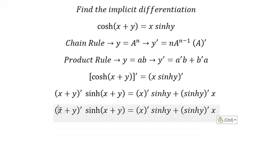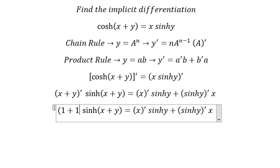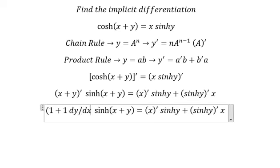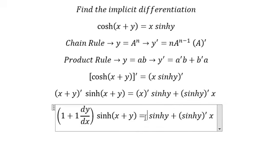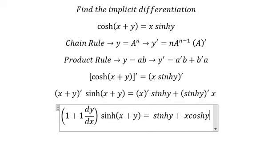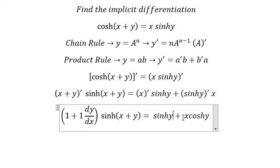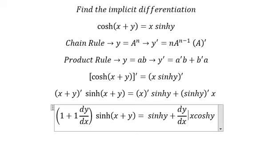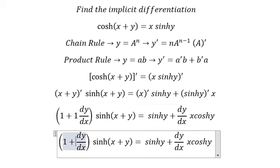So this one we have number one, this one we have number one, but this is about y so we have dy over dx. This one we have number one, this one we have cos y because we have y, so we have dy over dx in here. So we can simplify like this.